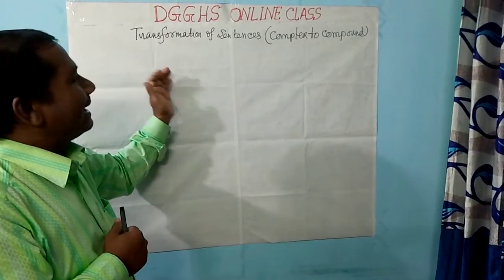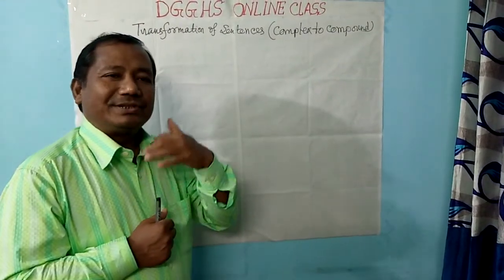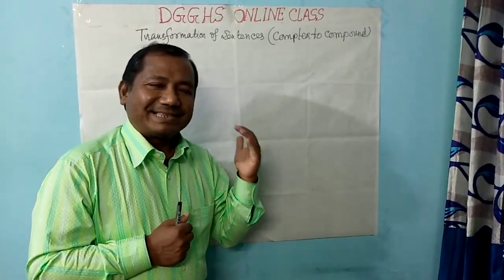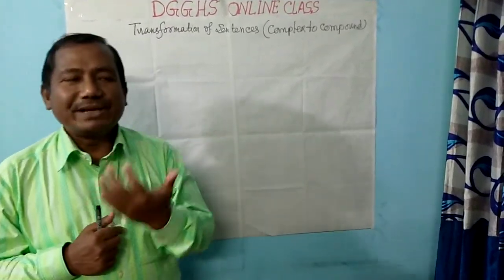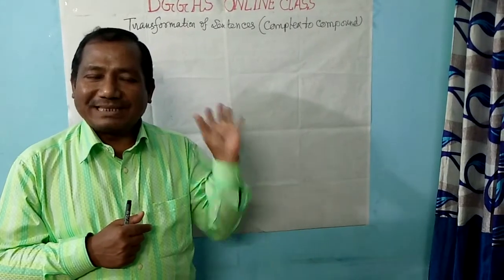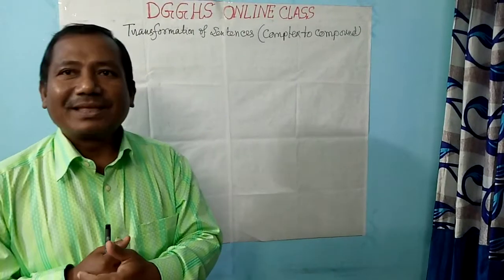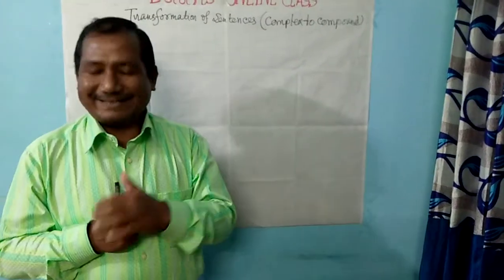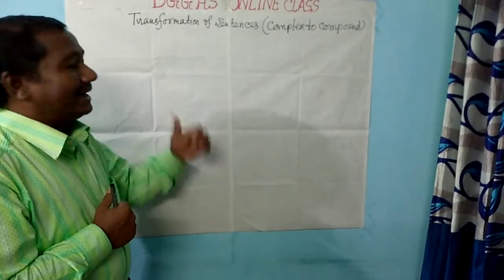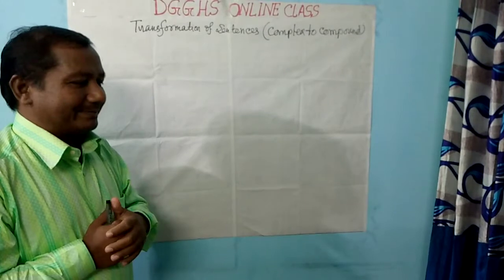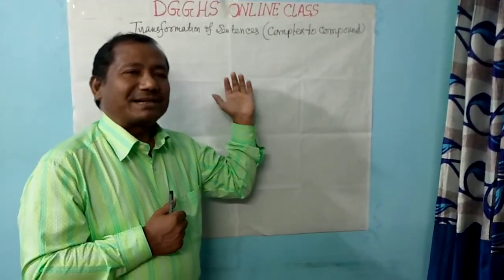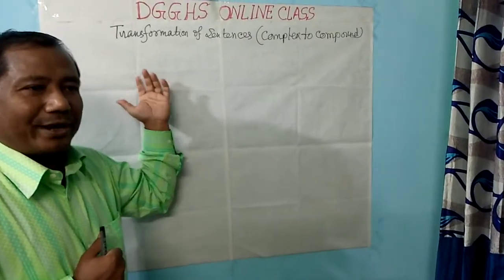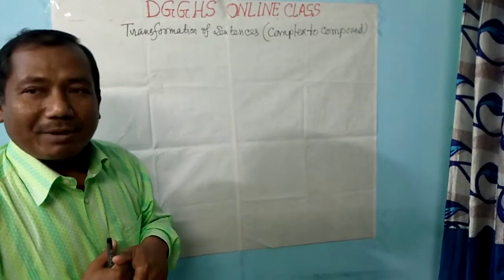So when we make a complex sentence into compound, we first try to find out the conjunctions. If the conjunctions are since, or as, or because, or when — if these conjunctions are used in a complex sentence, then in order to make it compound we use the coordinating conjunction 'and'. We also have to keep in mind that the clauses used after since, as, because, or when will come first when we make a complex sentence into a compound one.